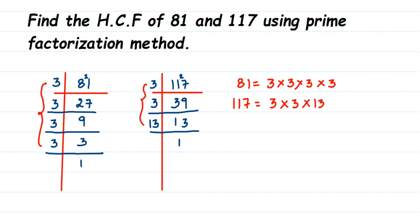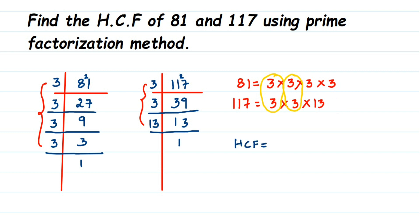We search for the prime factor present in both numbers. You can see this 3 is present in both, and this other 3 is also present in both. We have a 13 here but there's no 13 in 81, and there's a 3 in 81 but no matching 3 left in 117. So the HCF is found by taking one from each common pair.